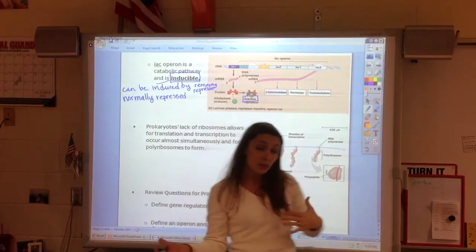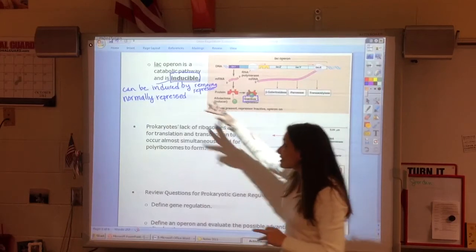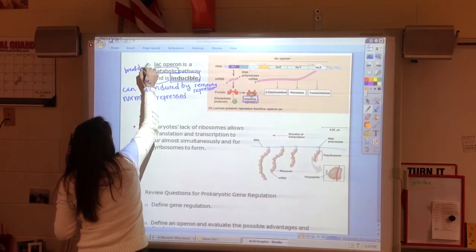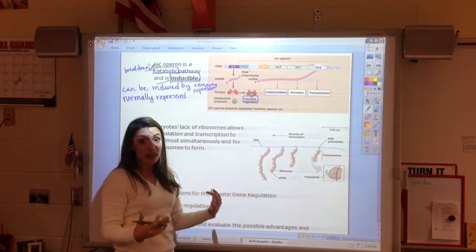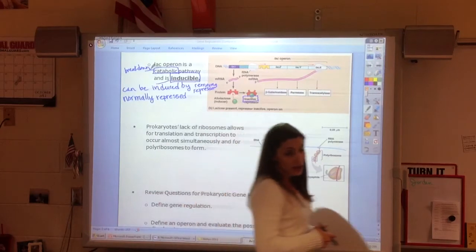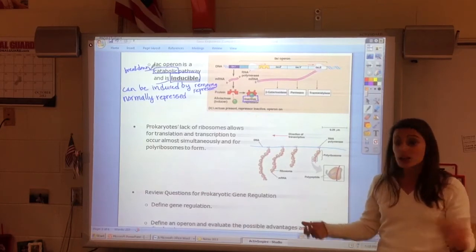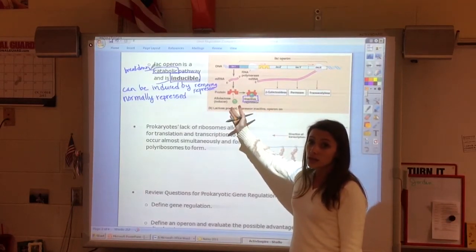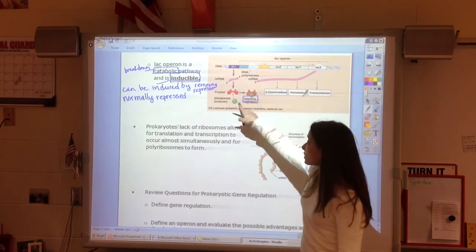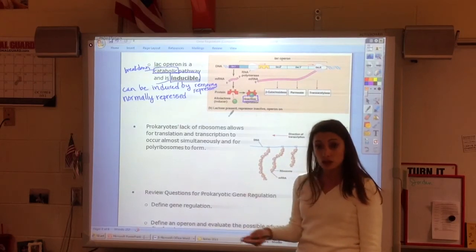Whether it's an inducible or repressible depends on whether the repressor is normally there. These are usually catabolic pathways which are breakdown, which means I'm not going to make these enzymes until that thing that gets broken down is actually there. This example is actually lactose. For bacteria, they won't make the enzyme to break down lactose unless lactose is there. If the bacteria doesn't have any lactose, it's not going to waste time transcribing these genes and making the proteins. But if lactose appears, it turns the repressor off and these genes can get transcribed and then translated.